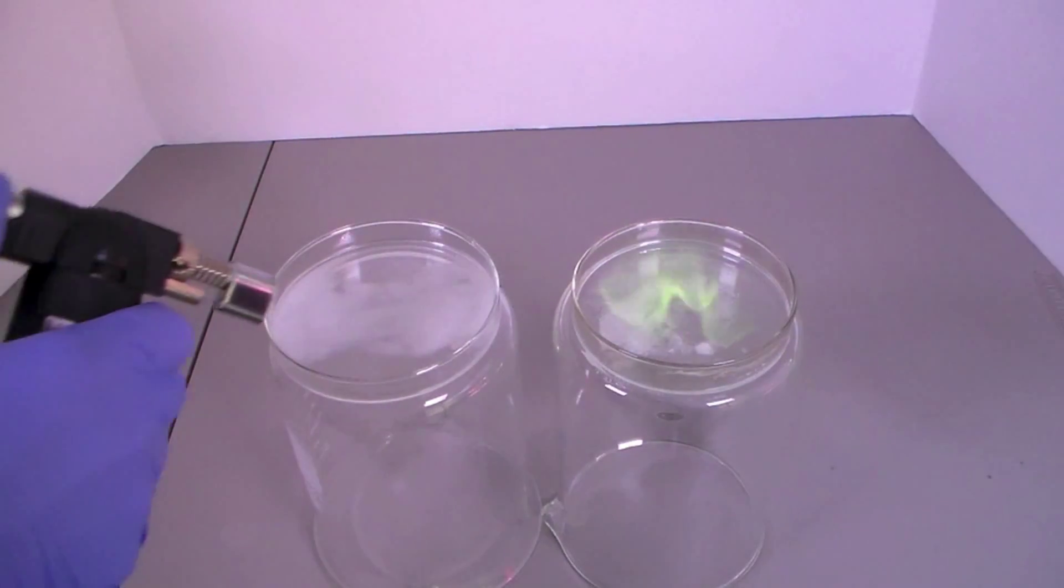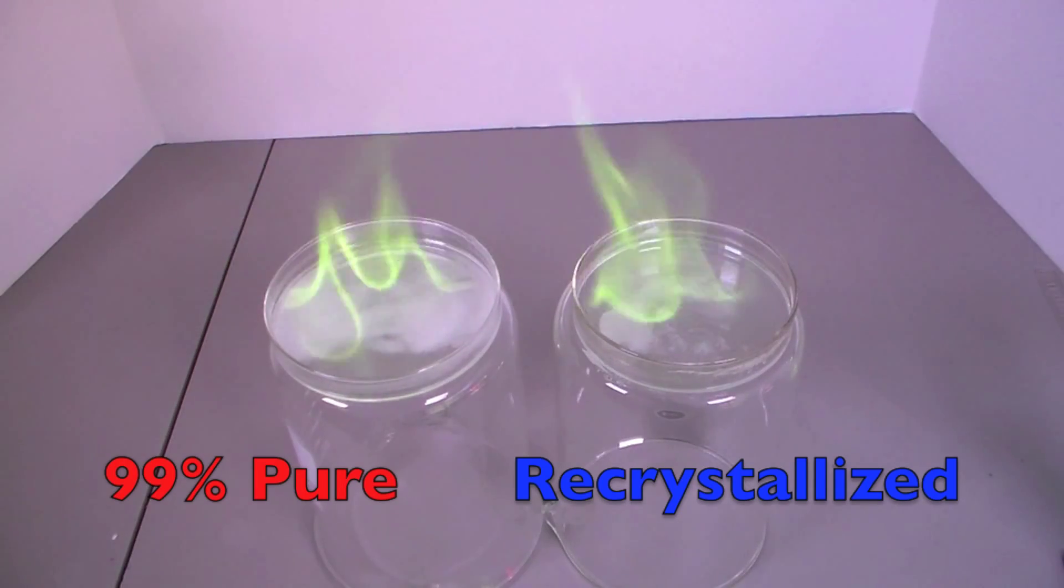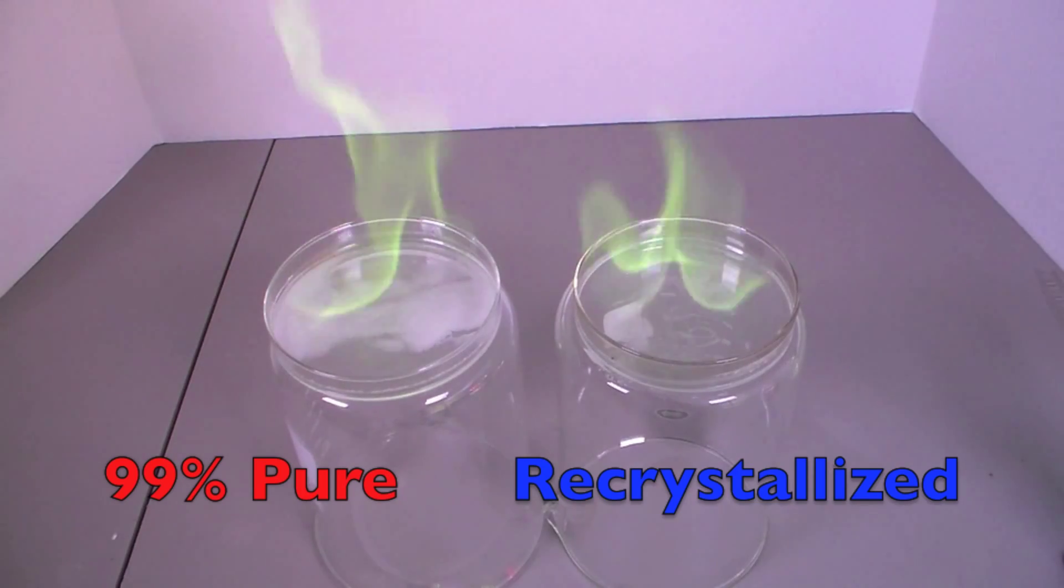Let's see how their flame colors compare. In this case, the 99% boric acid was actually already pure enough to produce a pure green flame. However, not all brands will be like this so it is best to recrystallize anyway.